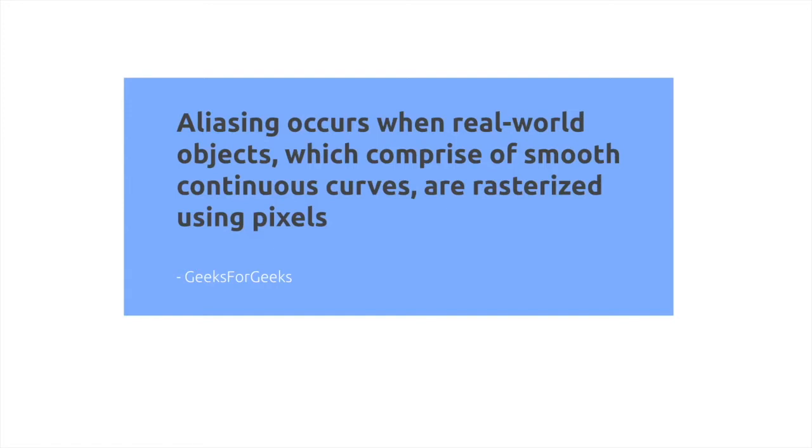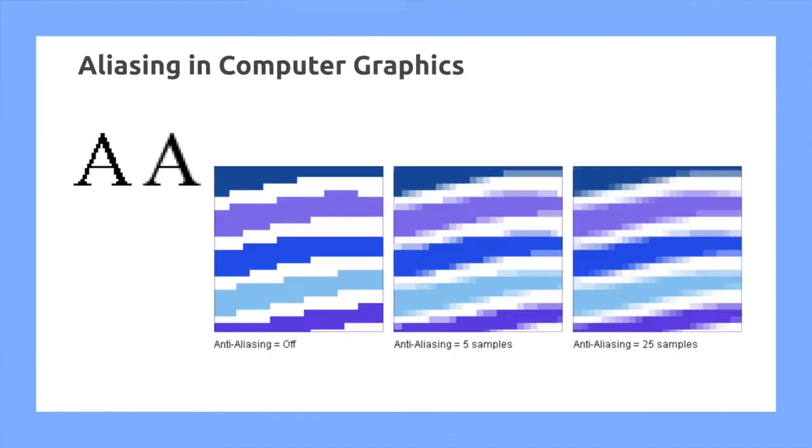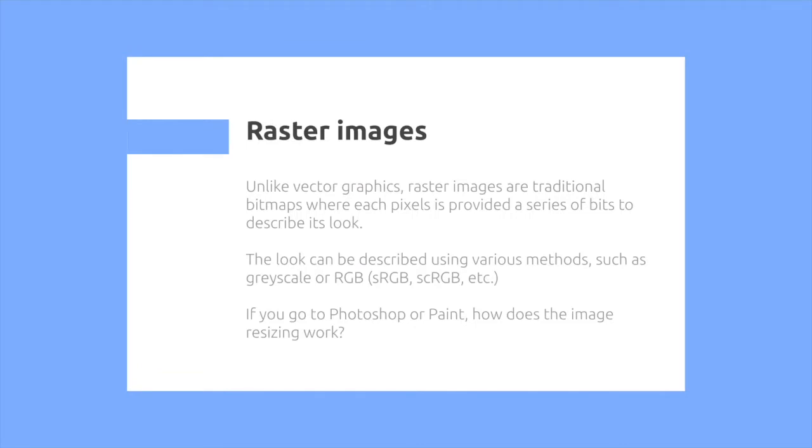Aliasing occurs when real-world objects, which comprise of smooth continuous curves, are rasterized using pixels. So we can see here that the letter A is definitely smoother when we apply anti-aliasing, otherwise it has those jagged edges. This is what aliasing occurs and occurs in rasterized images.